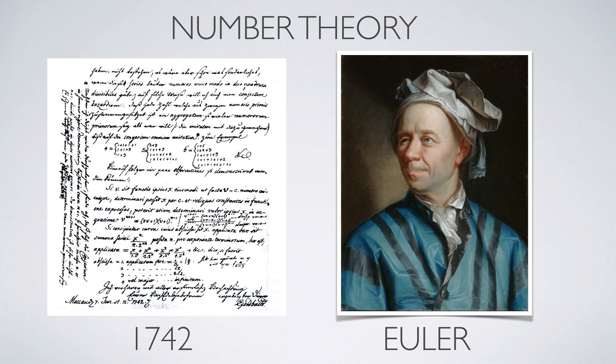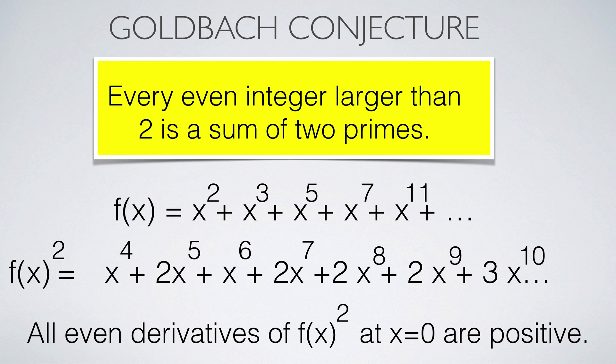Here is an example where calculus is used in number theory. You might have heard of the Goldbach conjecture which tells that every even number larger than two is the sum of two primes. Goldbach wrote this to Euler in 1742. Here is a calculus reformulation. Define a function f given as a power series, where we take all x^p where p is a prime. The Goldbach conjecture states that all but the first even derivatives of the square of this function are non-zero.